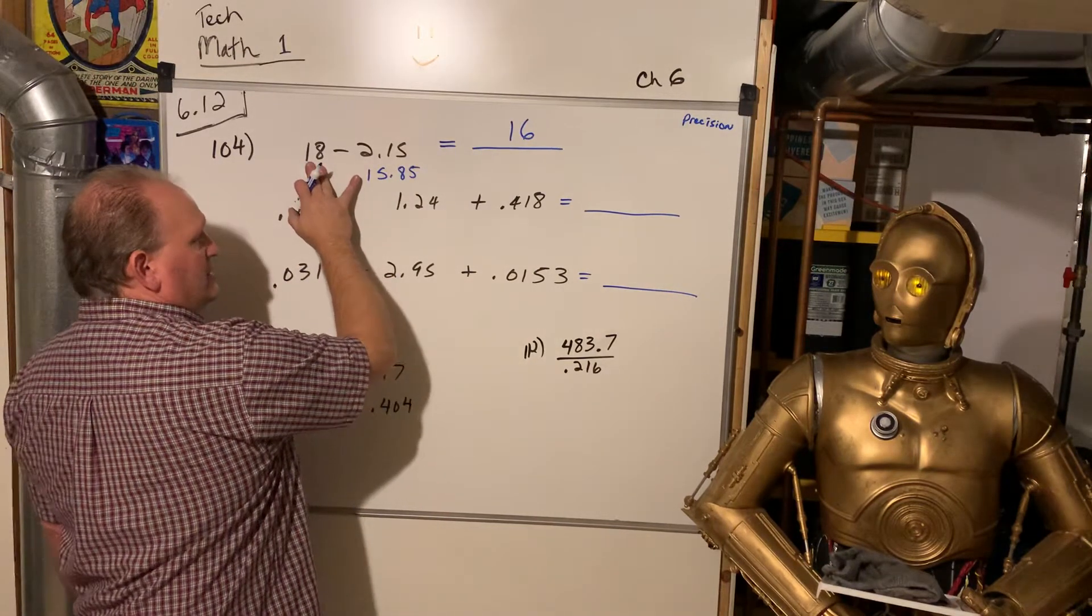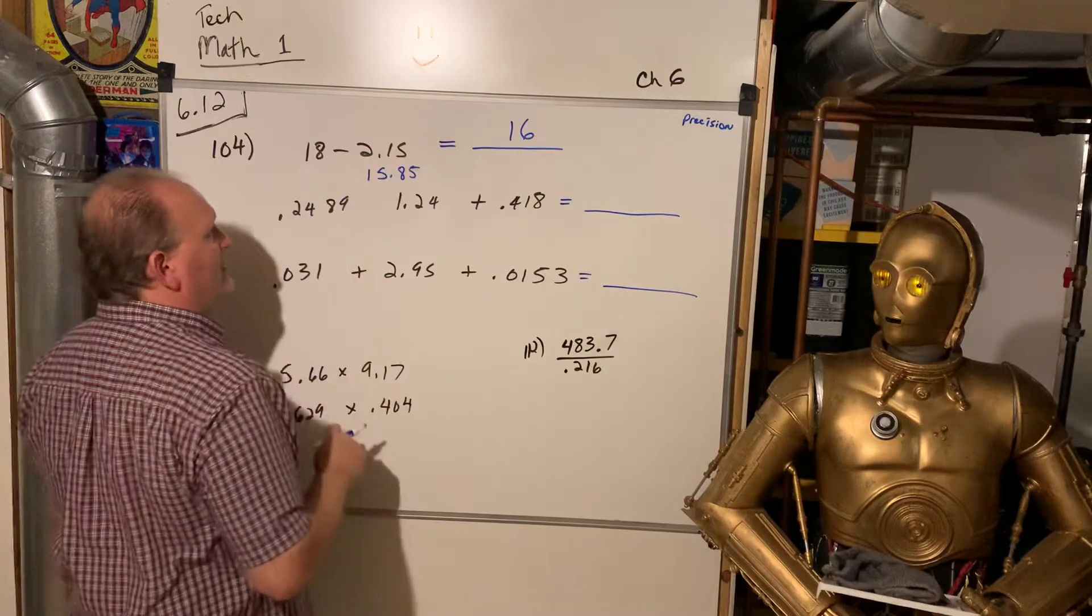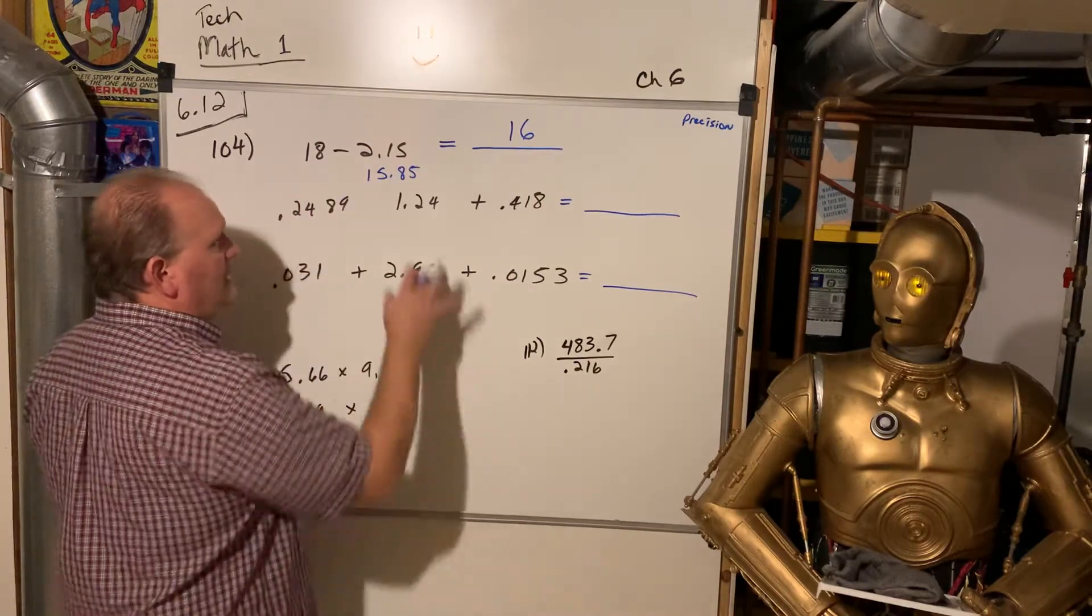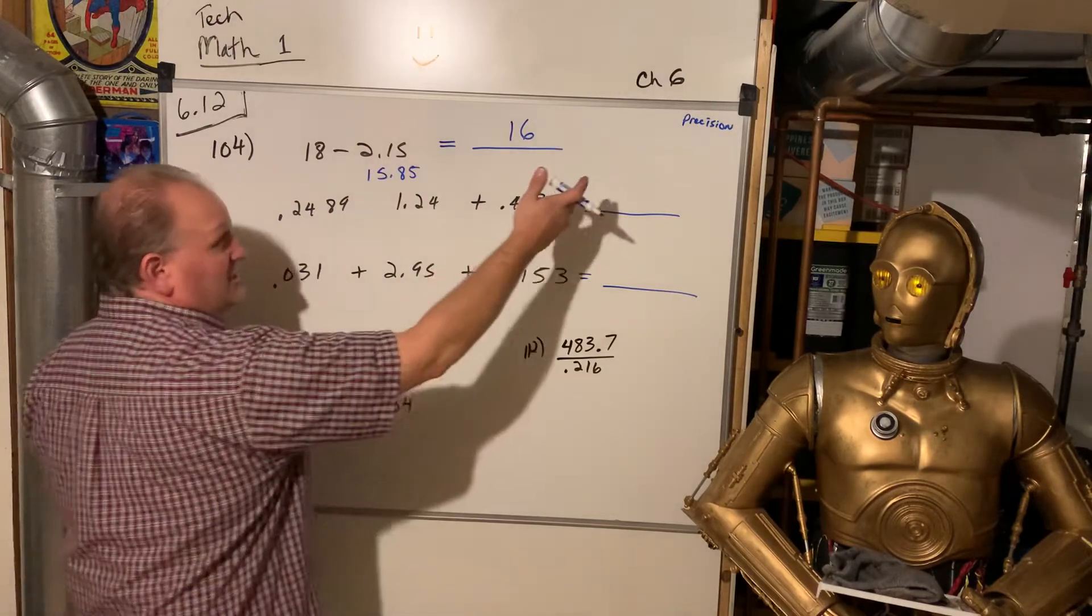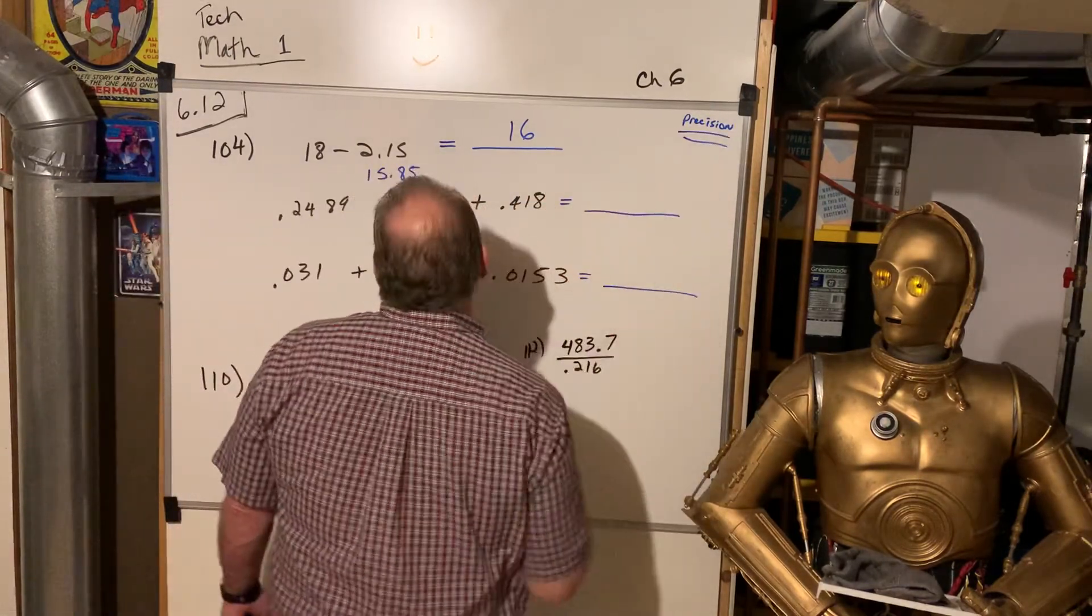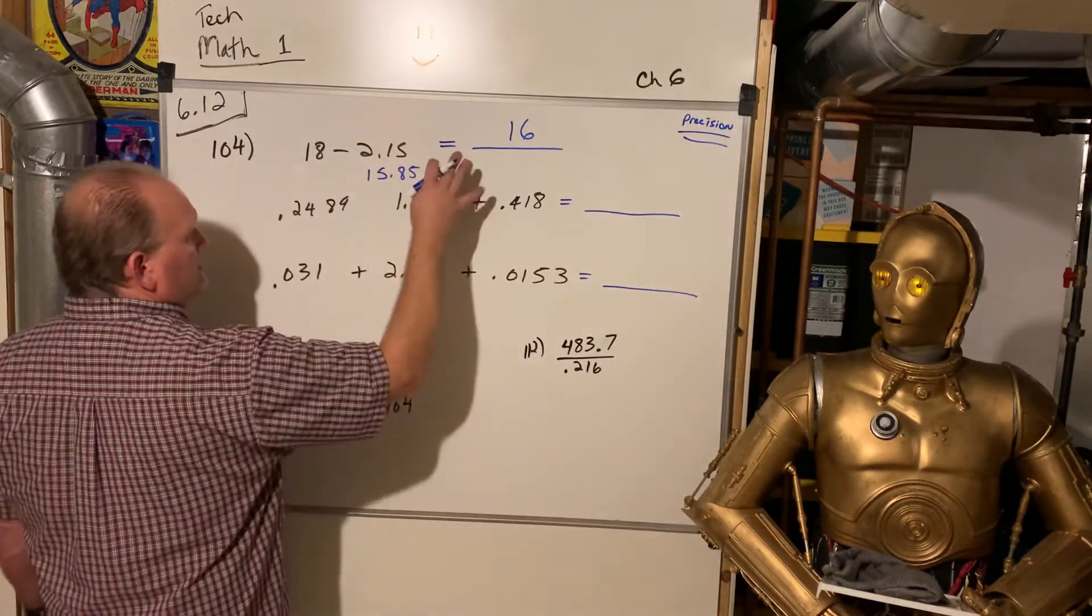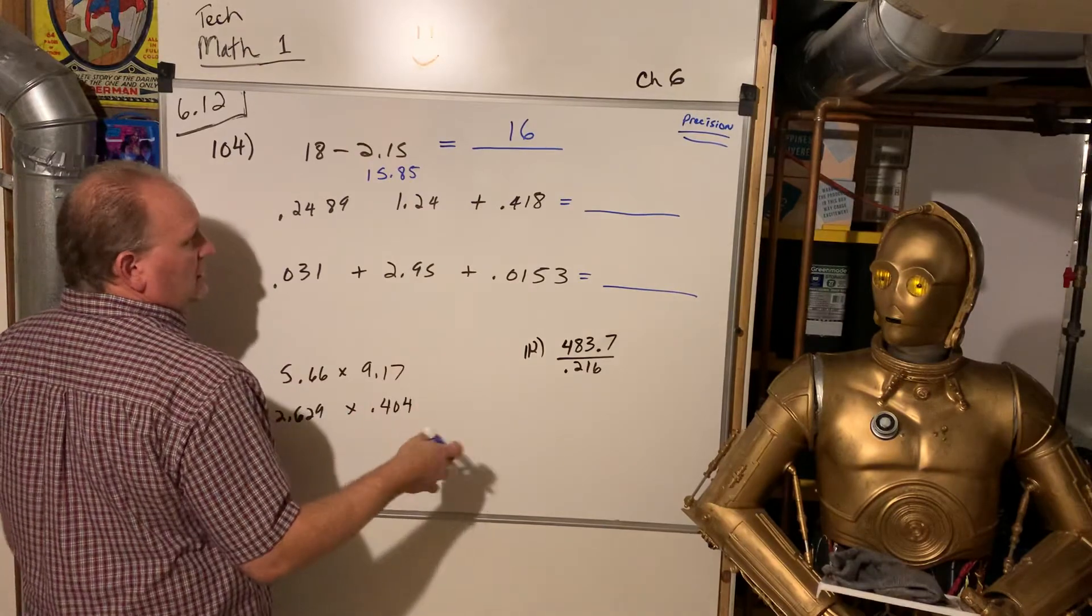Well, if I report 15.85, I'm now giving them a misleading answer. Because this one was just a whole number, rounded to a whole number, or just used, the measuring device was just for full feet. And this one was a lot more accurate, or precise, rather, not accurate, but precise. Okay, and so that's why you always go with the lower of the two.